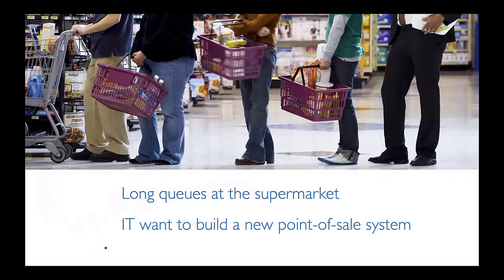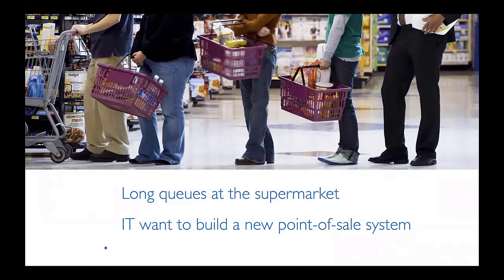You might think about dividing queues up. Sometimes the problem is caused by people taking too long in front of you — an elderly couple paying in cash, counting every penny. Why not have a slow lane where people who don't mind waiting can go, letting everyone else through quickly? The IT system is not necessarily the right solution and could well be the wrong one entirely.